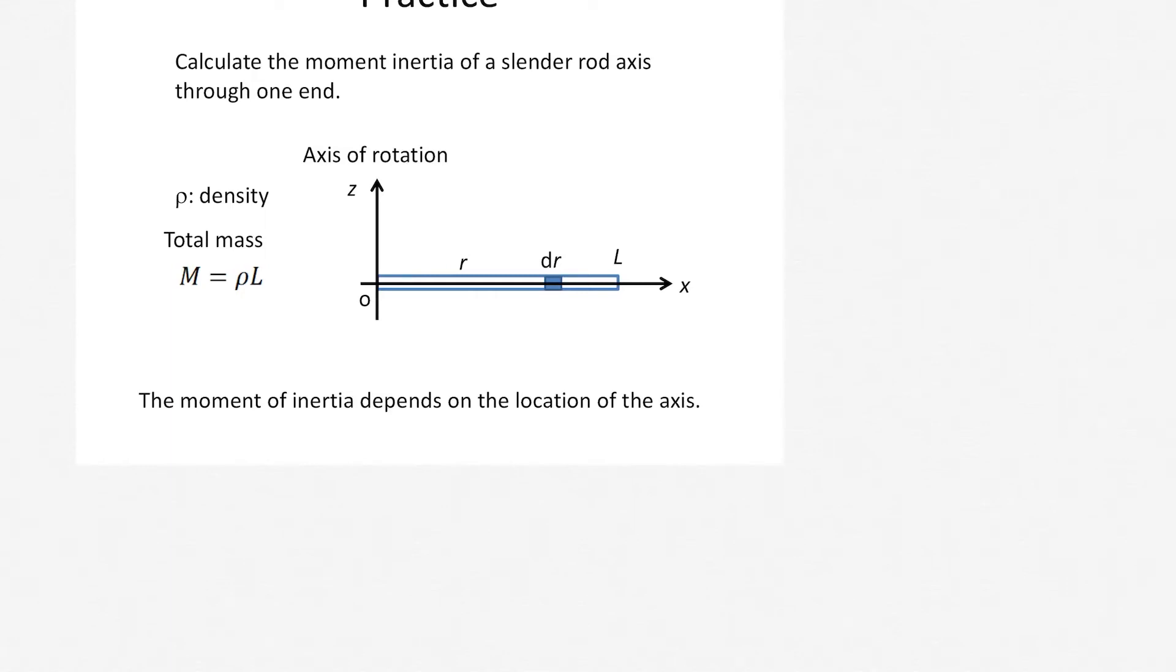In this practice, calculate the moment of inertia of a cylindrical rod axis through one end. The figure shows the situation. The axis of rotation is located at the end of the cylindrical rod. The density per unit length is ρ, so total mass is expressed as ρ times L.